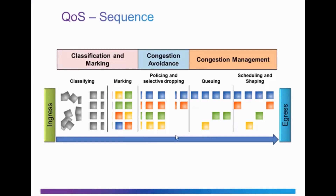Congestion avoidance is where traffic is policed and selectively dropped, and where network resources are allotted into different priorities. Packets are put into different queues based on different weights or sizes. The main congestion avoidance tool used in Cisco devices is Weighted Random Early Detection, or WRED. If queue buffers fill up, packets may be dropped proactively to avoid congestion. Lastly, in the congestion management section, packets are queued, scheduled, and shaped based on the network priorities or policies that have been applied.